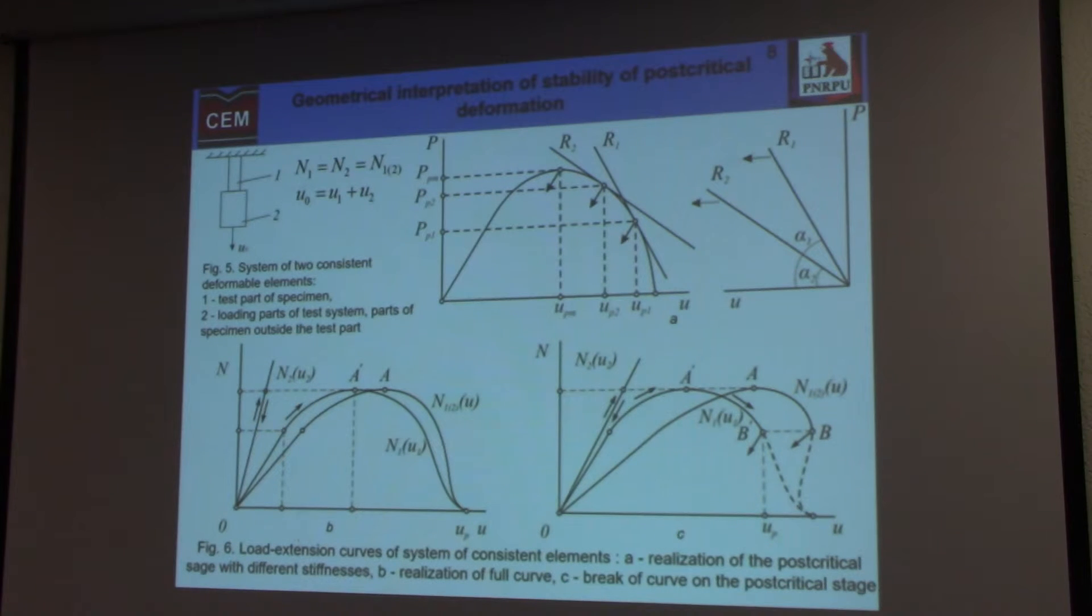Here you can see geometric interpretation of these criteria. For example, in tests, we can consider only two elements. The first one is only test part of sample. The second one is other parts of sample and other parts of loading machine.